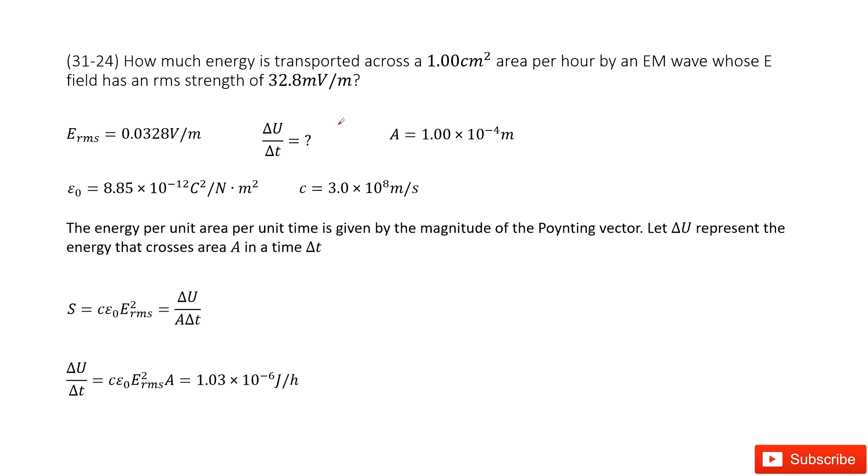There we have EM wave. We need to find the energy transported per hour. So this is delta U divided by delta T, the energy transferred by time taken.